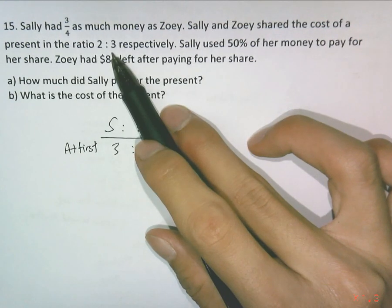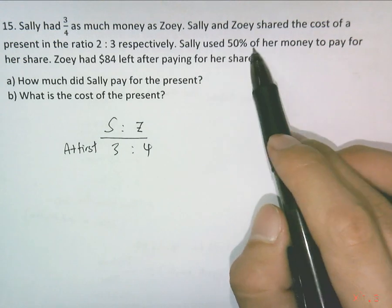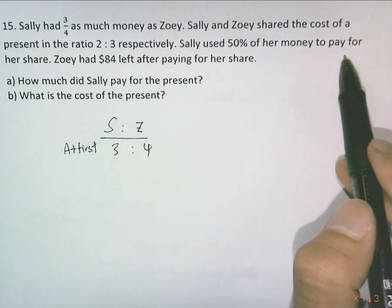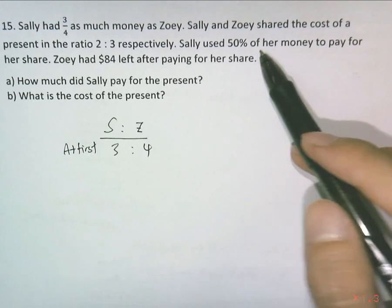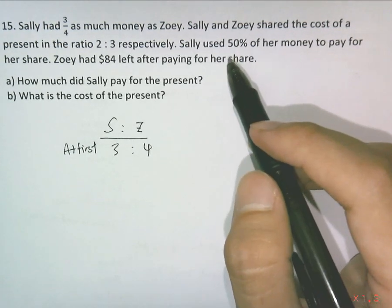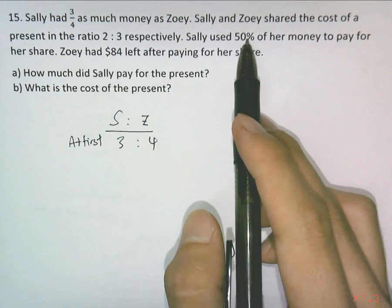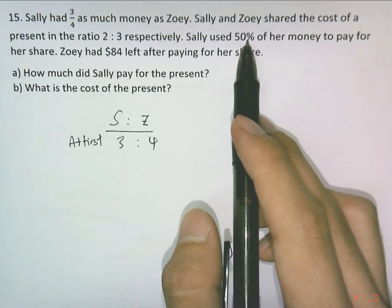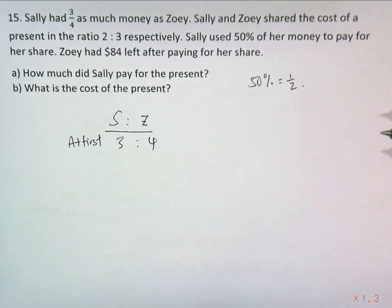In this ratio 2 is to 3. And it says that Sally used 50% of her money to pay. So 50% of her money, which is exactly half. It'll be more convenient if you use your units in terms of a number that's divisible by 2, because 50% is half.